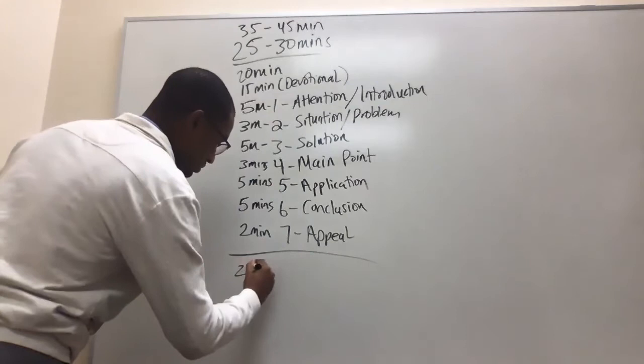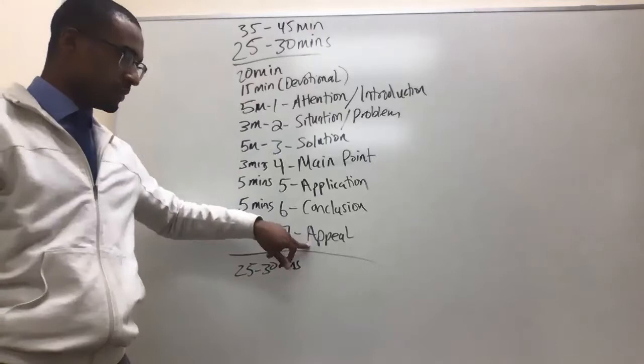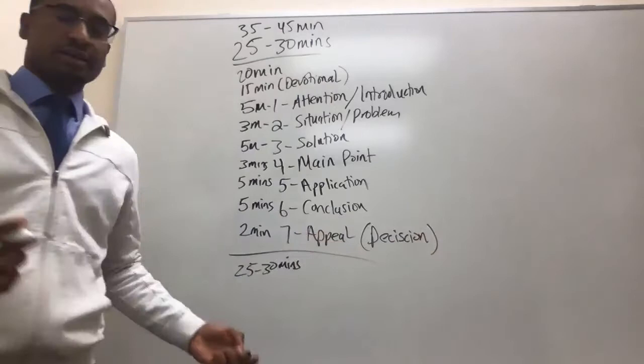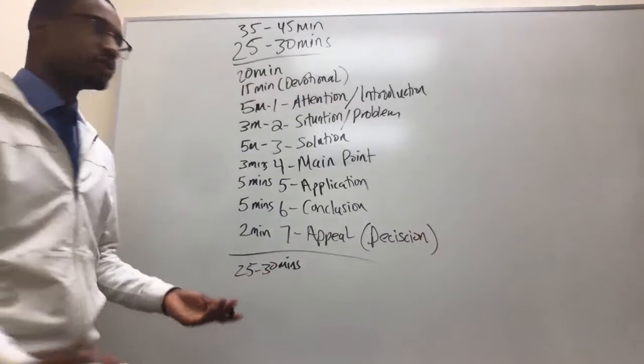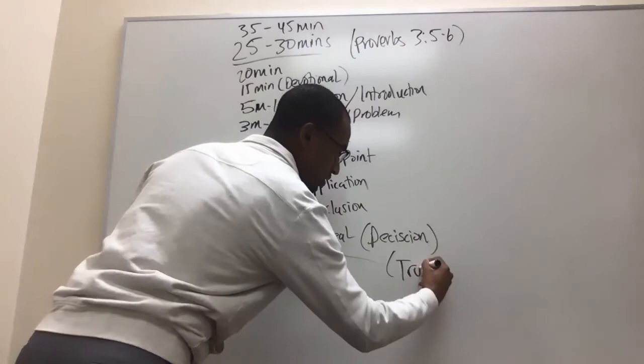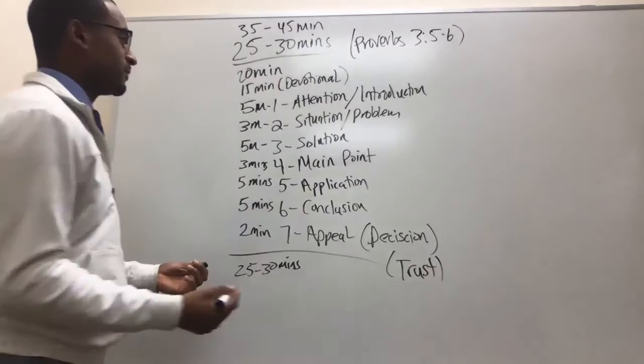Now you know the timing. Here's what typically helps me: I start with the appeal first. The appeal is more like a decision — what decision do you want them to make? That affects everything. For example, if we're using Proverbs 3:5-6 — 'Trust in the Lord with all thine heart, lean not unto thine own understanding; in all thy ways acknowledge him and he shall direct thy paths' — the decision is going to be based on trust.